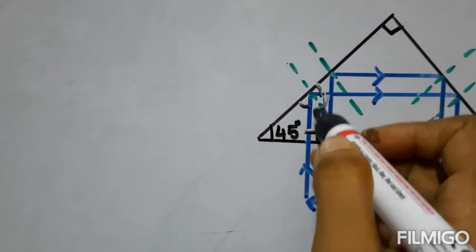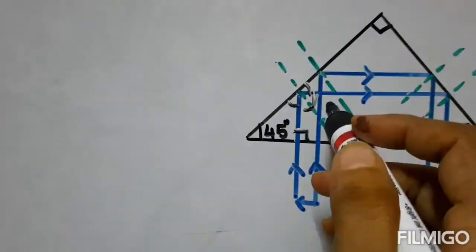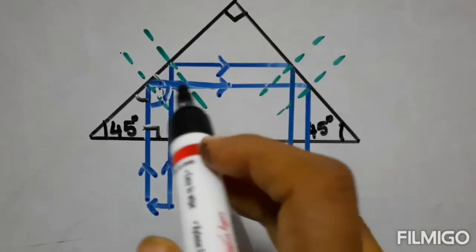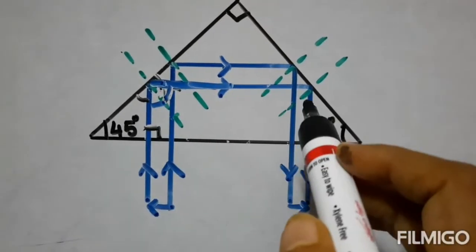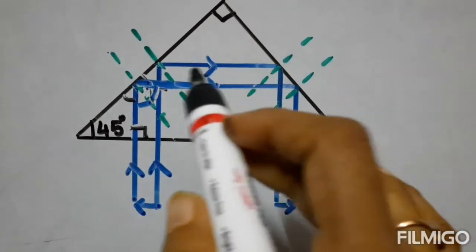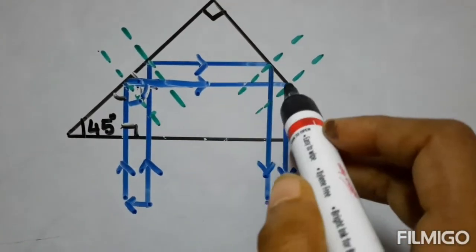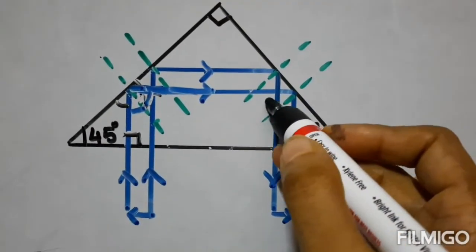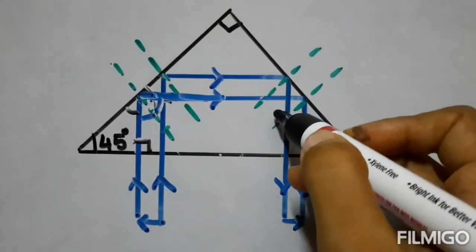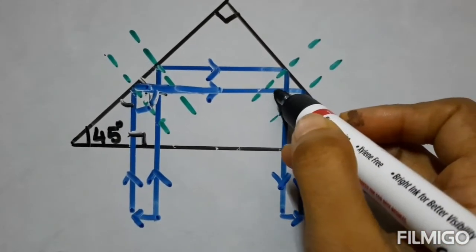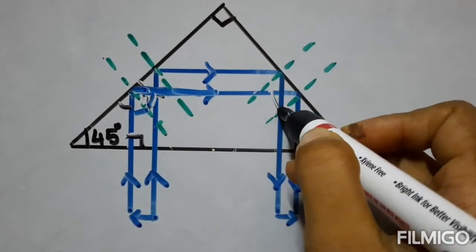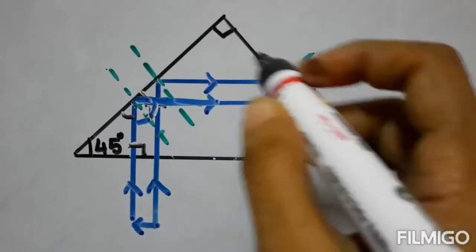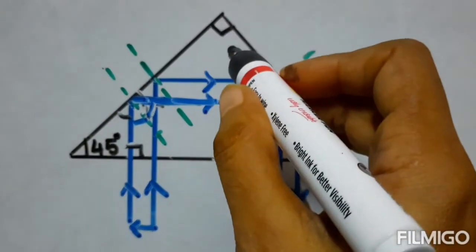Since 45° is more than 42°, total internal reflection occurs and the angle of reflection becomes 45°. Again this angle is also 45°, so total internal reflection occurs and it strikes the second surface. We can calculate the angle of reflection and find this angle is 90°.